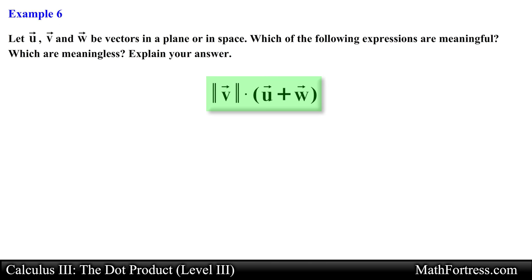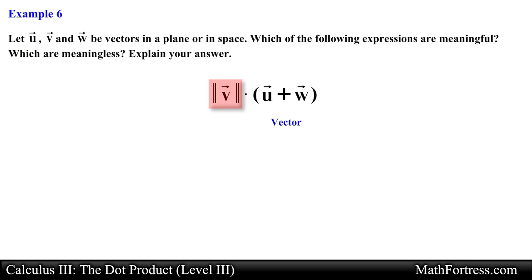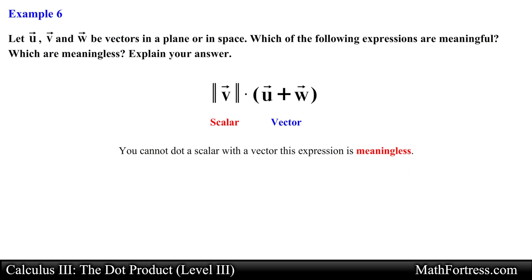Finally, the magnitude of vector v dotted with the quantity of vector u plus vector w. The sum of vector u and vector w simplifies to a vector, which will then be dotted with the magnitude of vector v — a scalar. Since you cannot dot a scalar with a vector, this expression is meaningless.